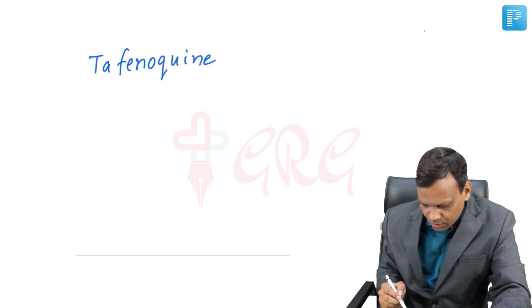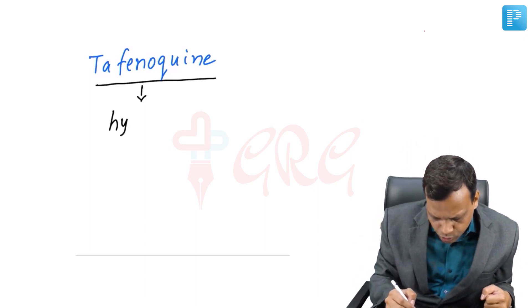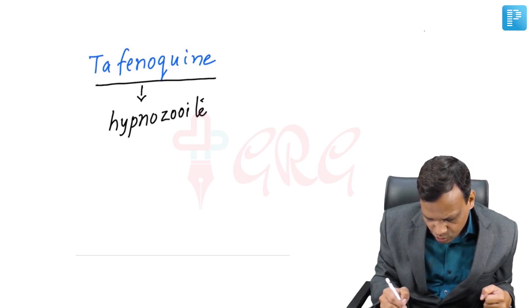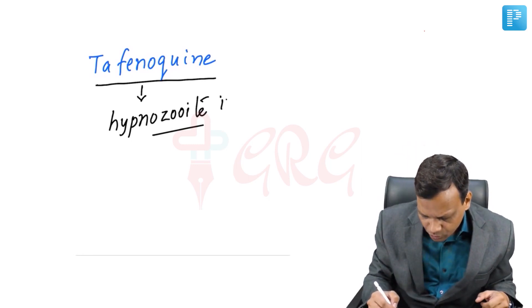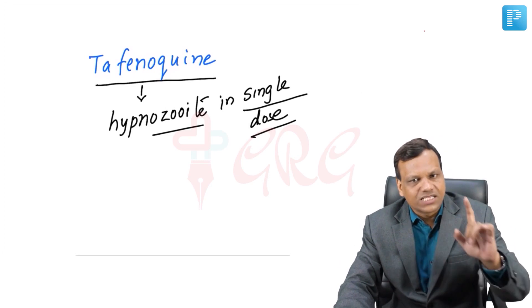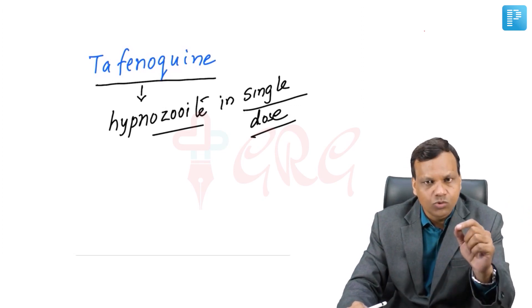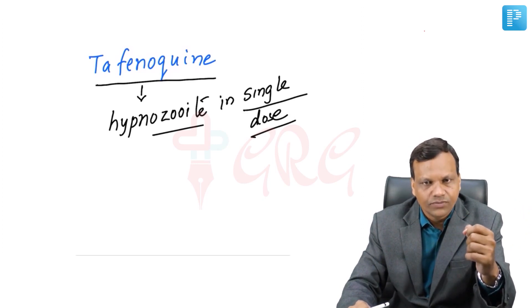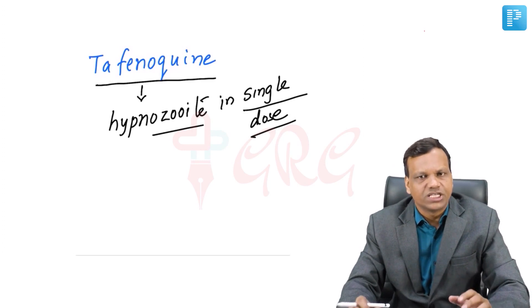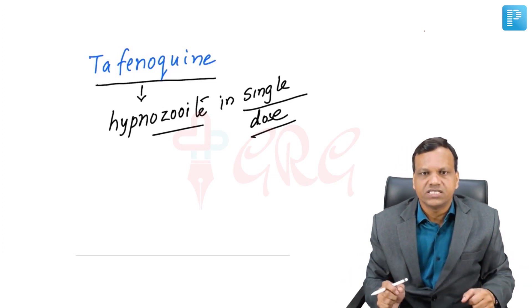A new drug called tafenoquine has been developed. It is similar to primaquine and can kill hypnozoites (exo-erythrocytic stage), but its key advantage is that it can kill hypnozoites in a single dose — meaning it can be used as a single dose even for P. vivax, where primaquine requires two weeks. Like primaquine, tafenoquine can also cause hemolysis in G6PD deficiency and is contraindicated in pregnancy and infants.